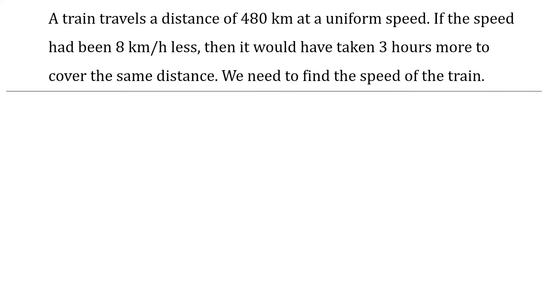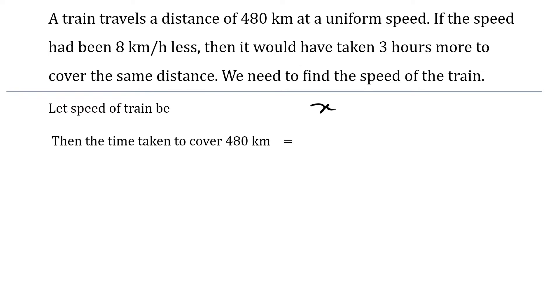Let us assume the speed of the train be x km per hour. Then the time taken to cover a distance of 480 km would be distance over speed, that is 480 by x hours.